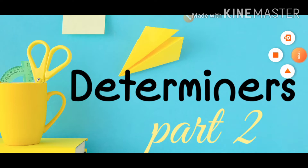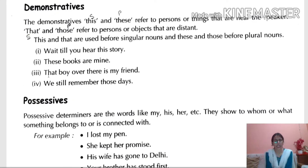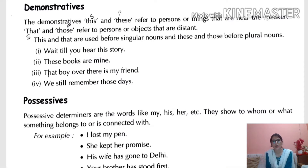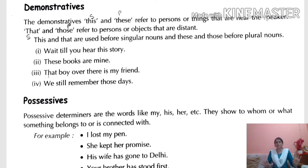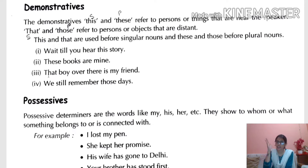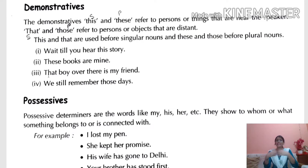Next is Demonstratives. The demonstratives 'this' and 'these' refer to a person or thing that are near the speaker. 'That' and 'those' refer to persons or objects that are distant. In determiners, this is my favorite because it is the easiest one. Demonstrative means to indicate something — this is the thing, that is the thing.